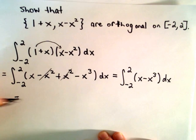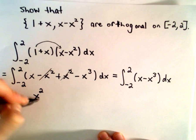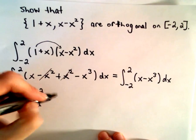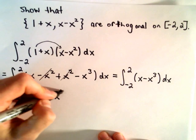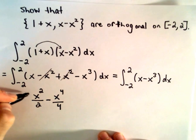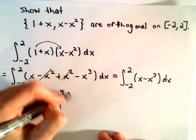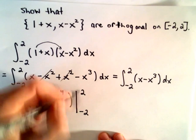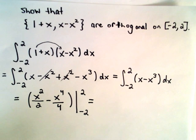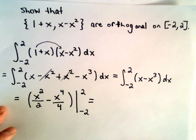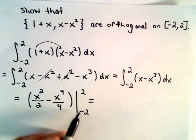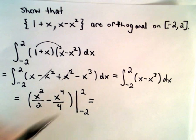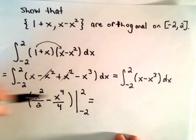This isn't too bad at all. When we integrate x, we'll have x squared over two. When we integrate x to the third, we'll have x to the fourth over four. Now we simply have to evaluate that from negative two to two.